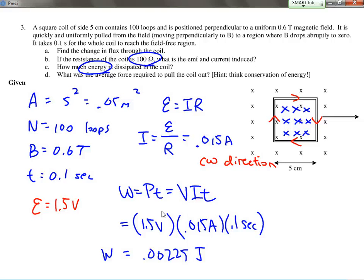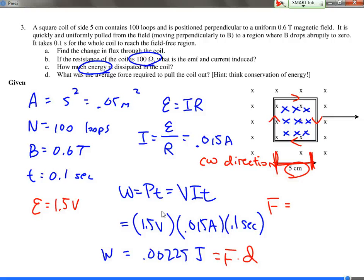However, if we're looking for the average force required to pull it out. Again, this could be solved a couple of different ways, but I think the easiest way would simply be to do work equals force times distance. And the distance that's being pulled out would be this distance over here, because that's the amount of length that's actually pulled out. So in this case, to solve for the force, the force is simply equal to the work of 0.00225 joules divided by the distance of 0.05 meters, which ends up equaling to 0.045 newtons.